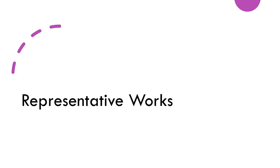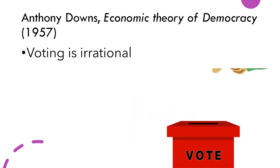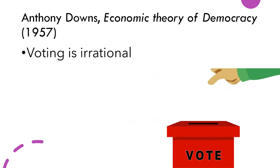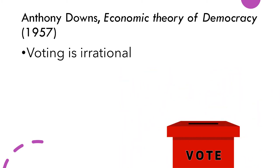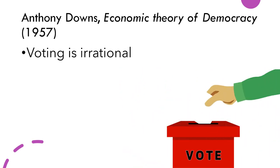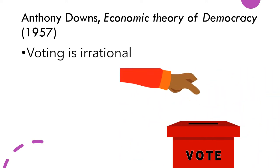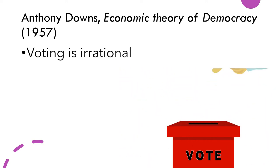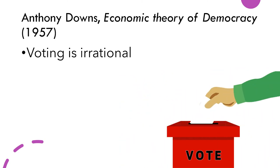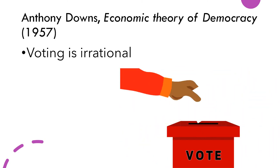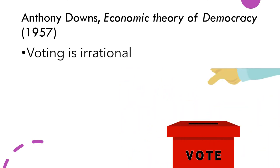We now move to some representative works for rational choice theory. First, we have Anthony Downs, through his work Economic Theory of Democracy. We have discussed the median voter from him previously. Another idea from him is that voting is irrational. According to Downs, there is little incentive for the well-informed voter as he has virtually no chance to determine the outcome of the election. So spending time following the issues is not personally worthwhile for the voter, as voters are assumed to be utility maximizers.